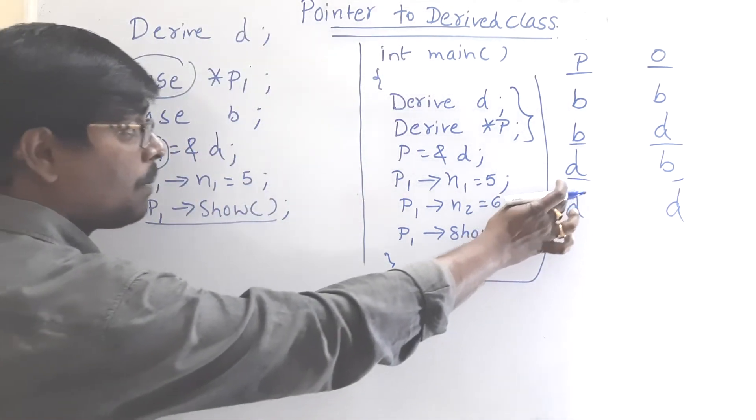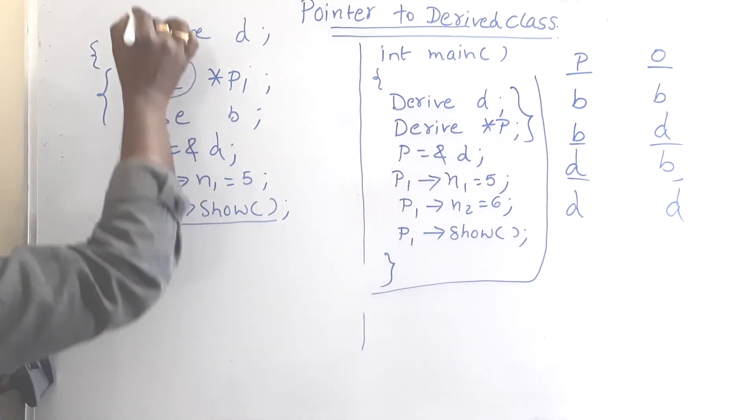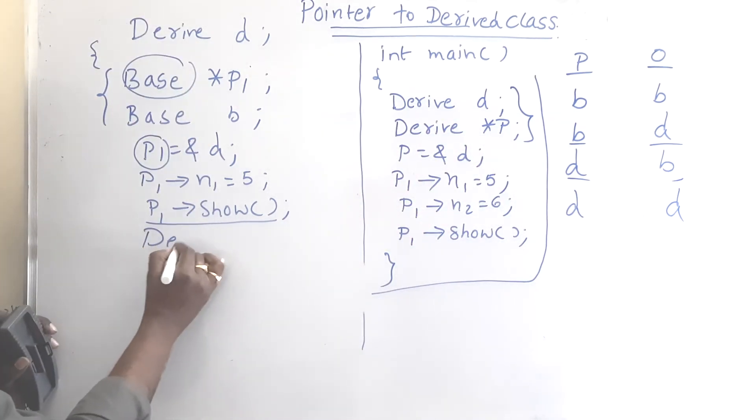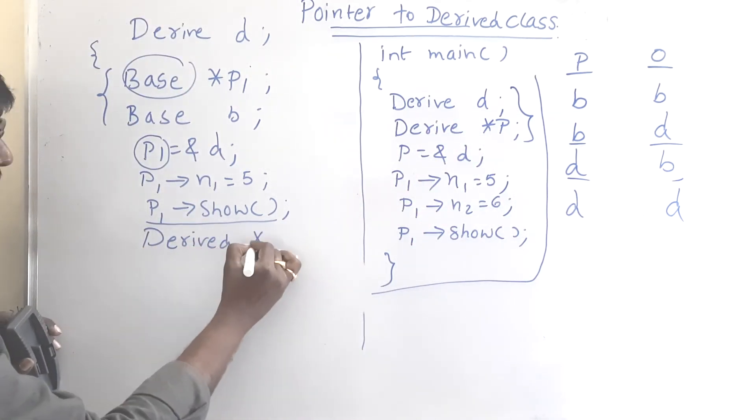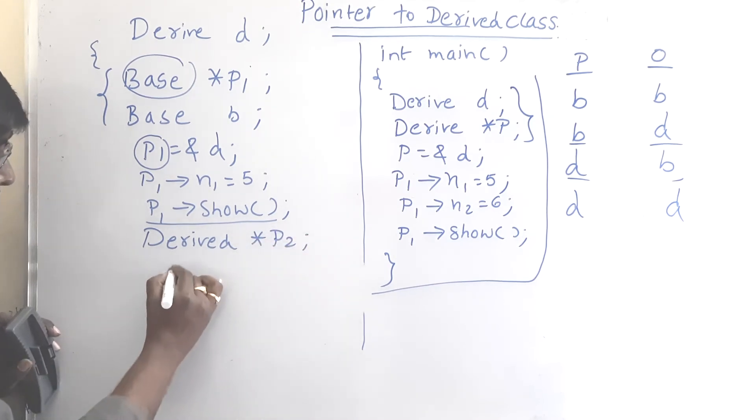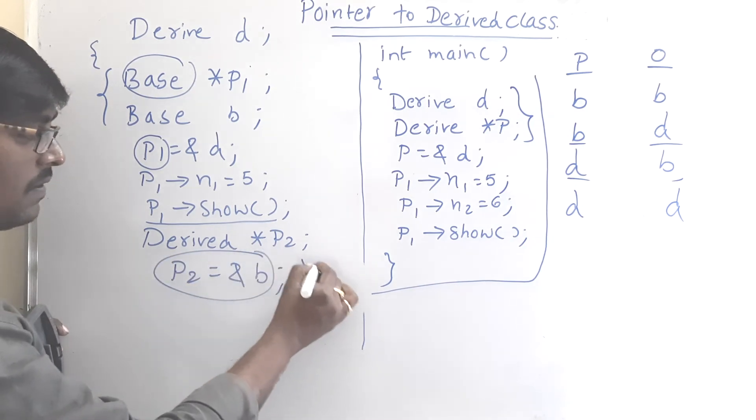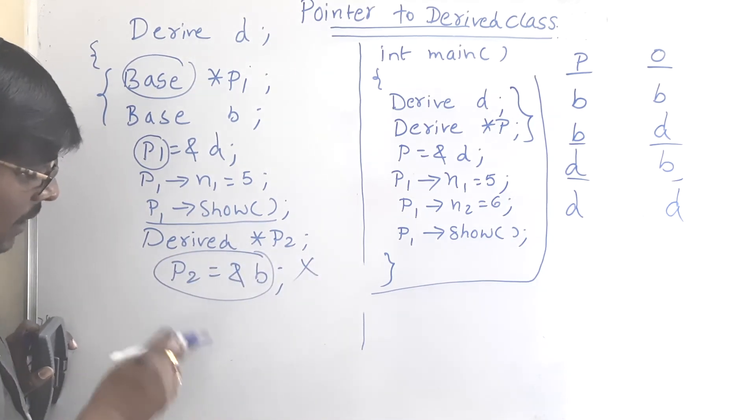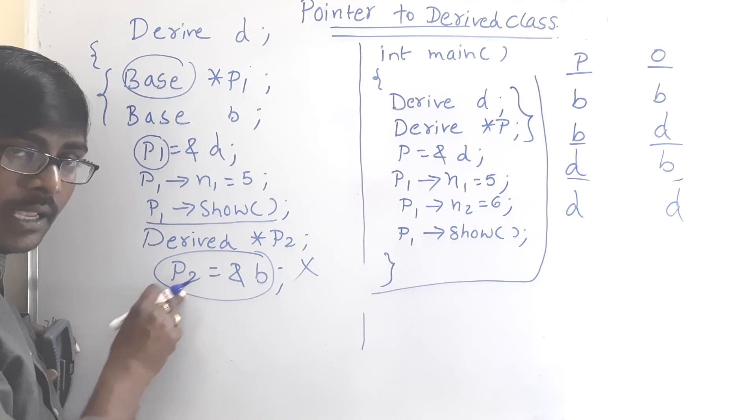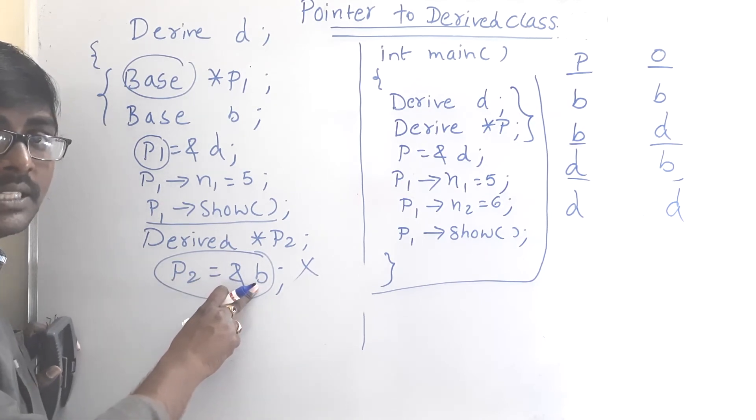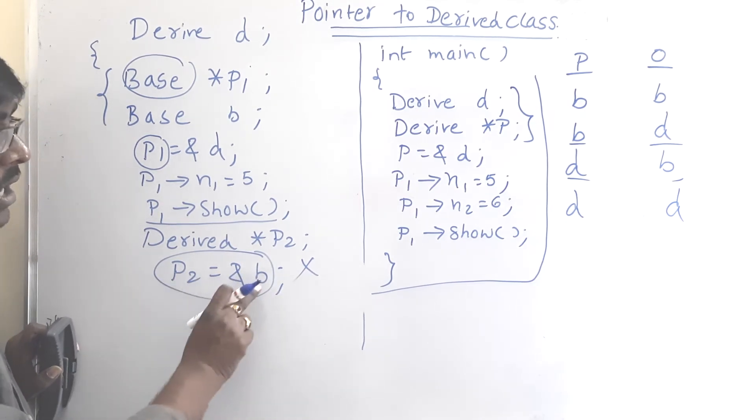Now coming to third one. Pointer is derived type. For example derive star p2. P2 stores address of base class. Remember this is invalid. This is incompatible. Pointer is derived type, object is base type. That is incompatible. This is not possible.